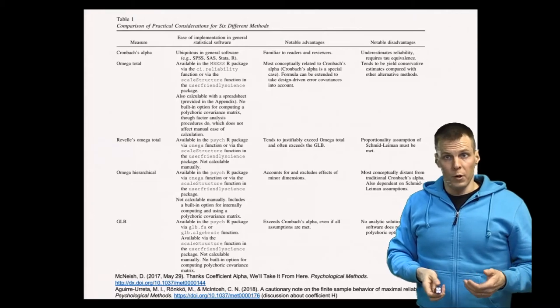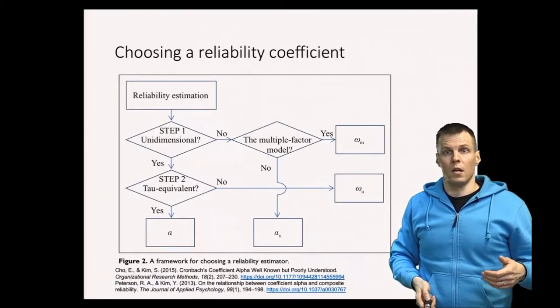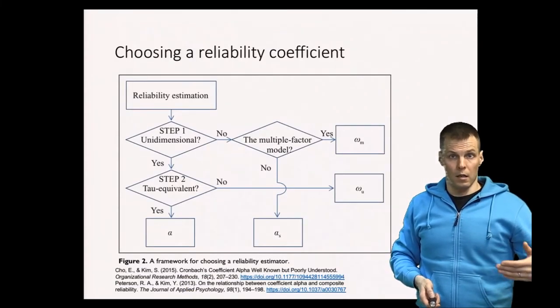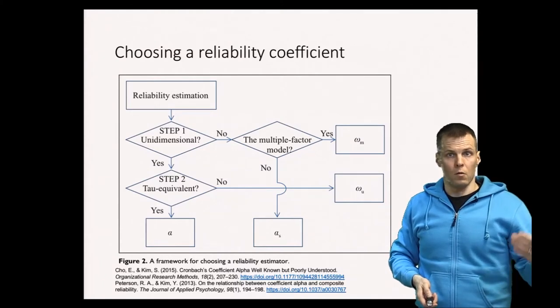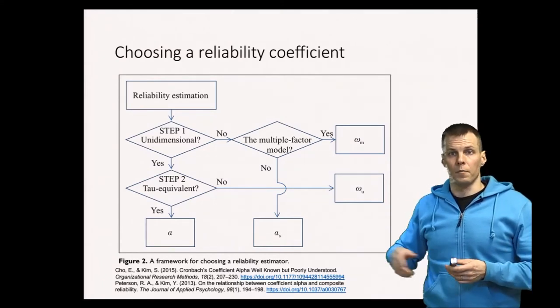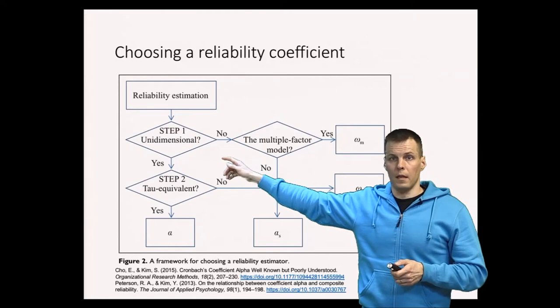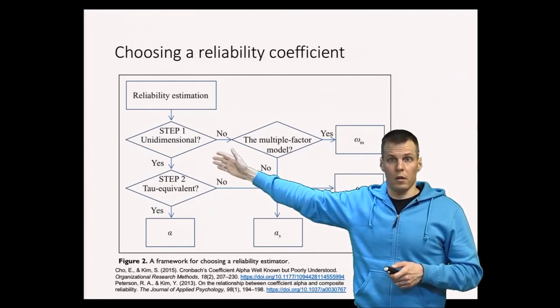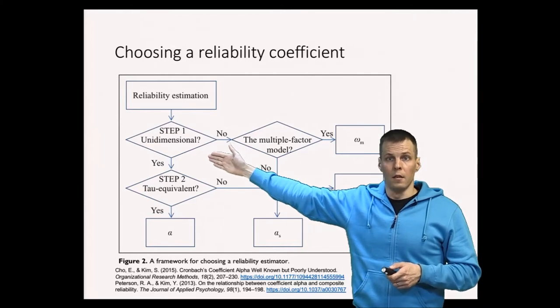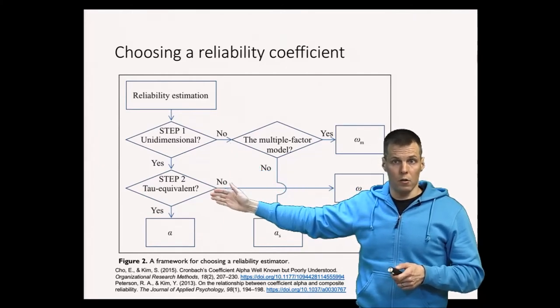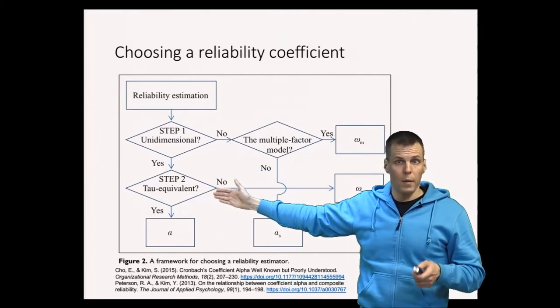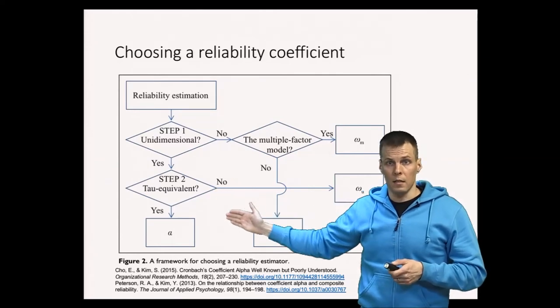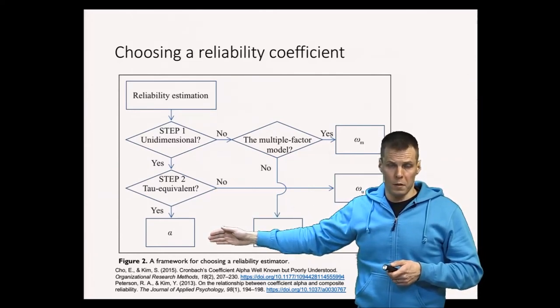Joe's paper presents this nice decision diagram of which reliability index to choose from. So he starts by checking is the scale unidimensional, and if the scale is unidimensional, only measures one thing, then you check are the indicators about equally reliable. Do they have the same true score? If yes then you're going to be okay with coefficient alpha.